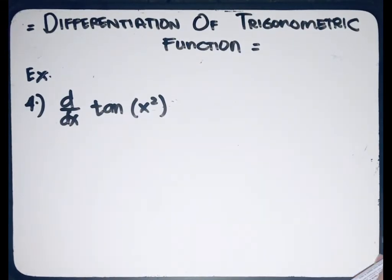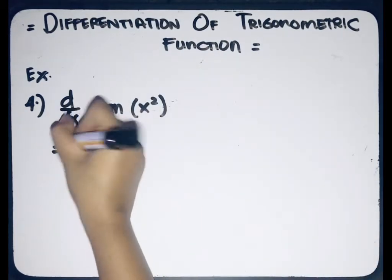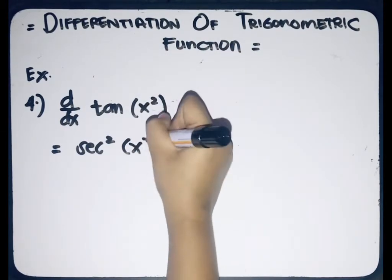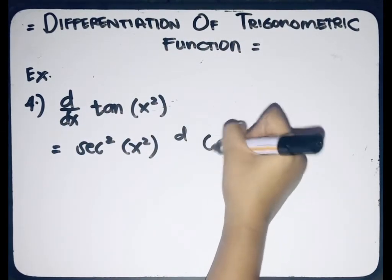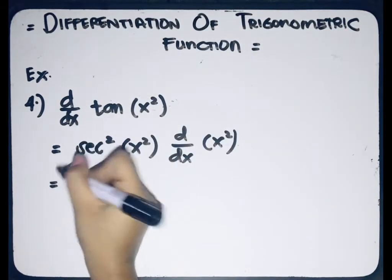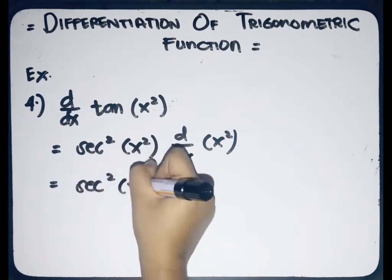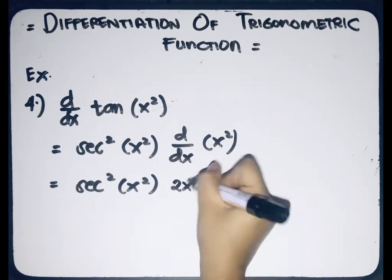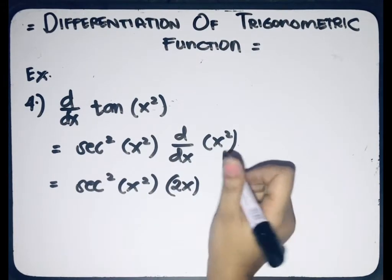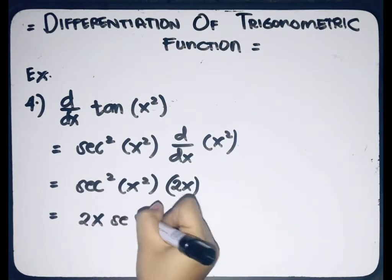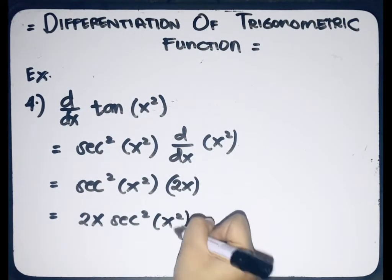Fourth example: we have the derivative of tangent x squared with respect to x. The derivative of tangent gives us secant squared of x squared, multiplied to the derivative of x squared with respect to x. The derivative of x squared is equal to 2x. Since 2x is a constant factor, we can write it in front. So we'll have 2x secant squared of x squared as the final answer.